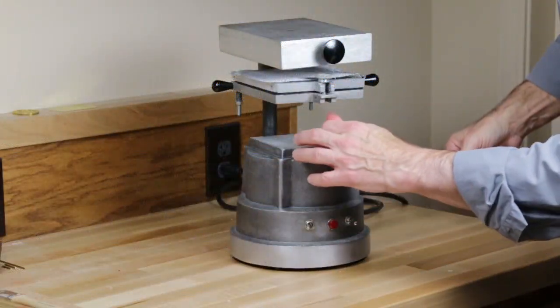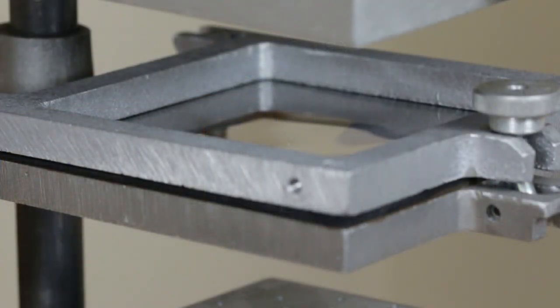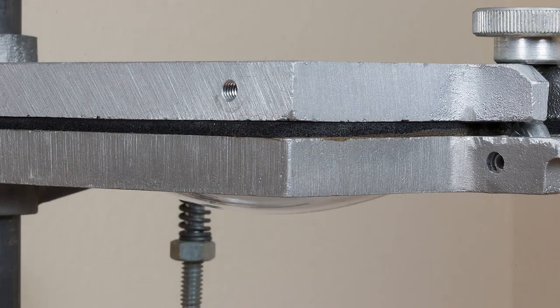The form is placed on the vacuum table and the heating element switched on. As the material is first heated, it will distort and then develop an even slump.